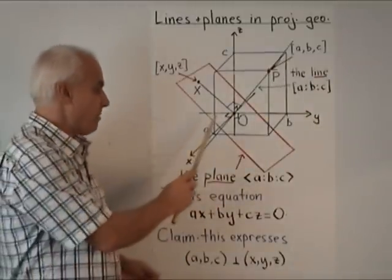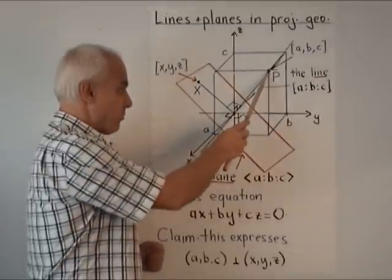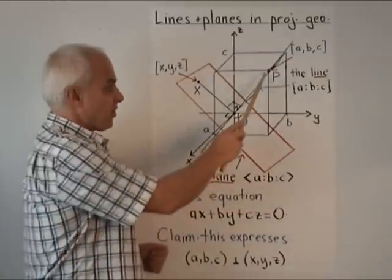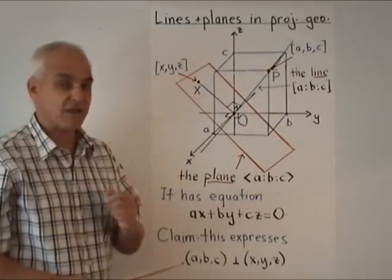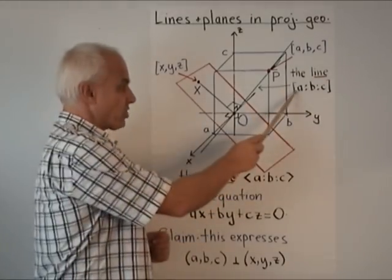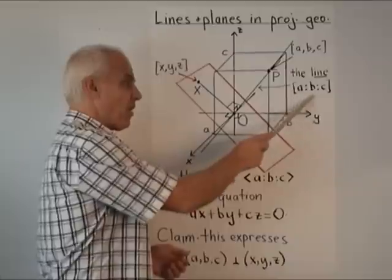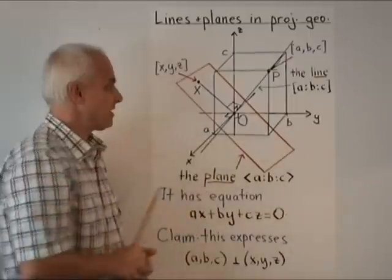Now what's going to be important for us in projective geometry is the line through the origin and this point P, that line in green there. That line in green is only determined by A, B, and C up to a factor. So it's really the proportion between A and B and C that counts. And so we're going to call the line A to B to C, that proportion A to B to C.